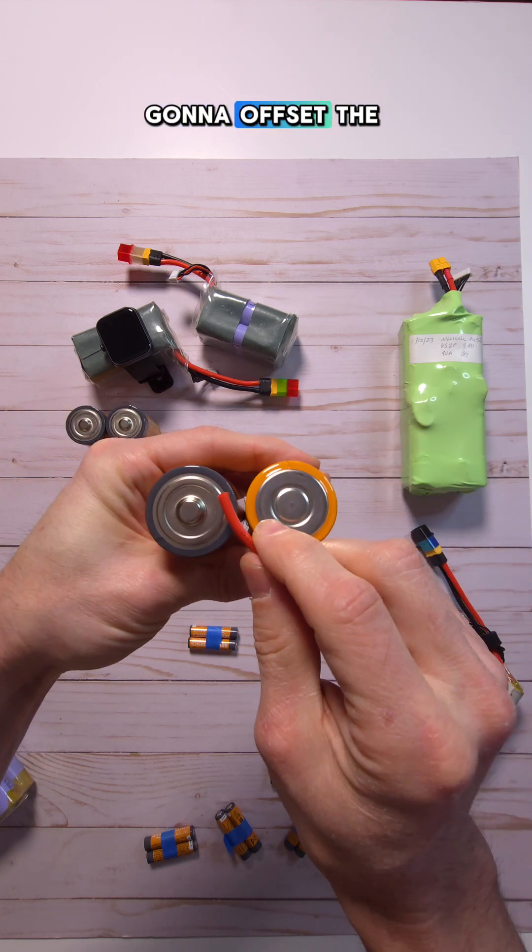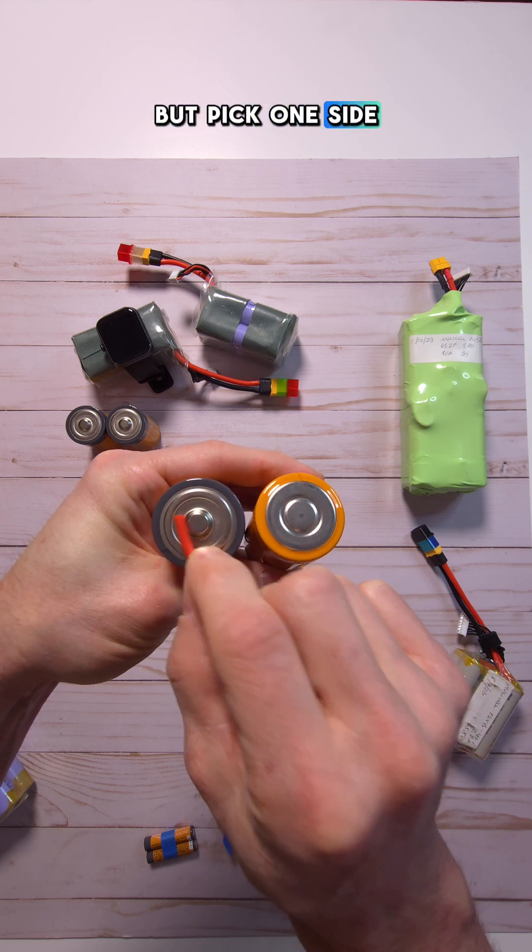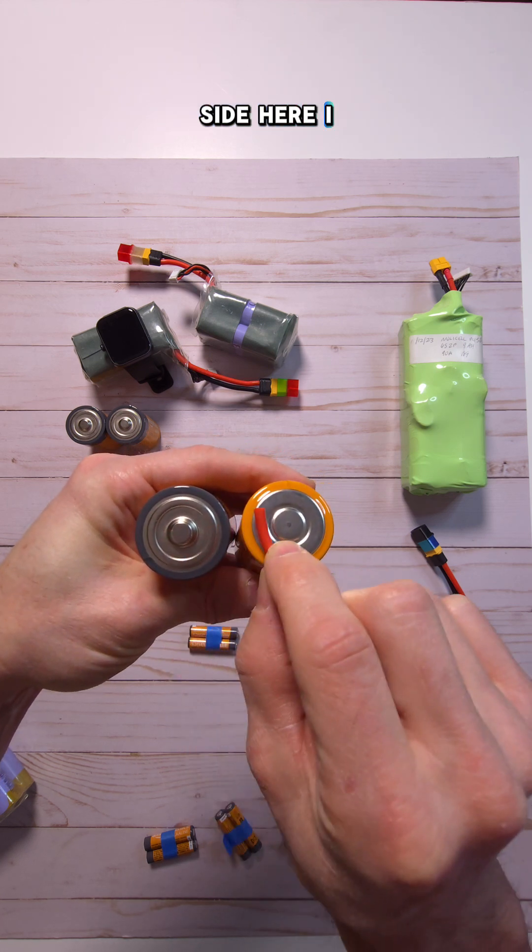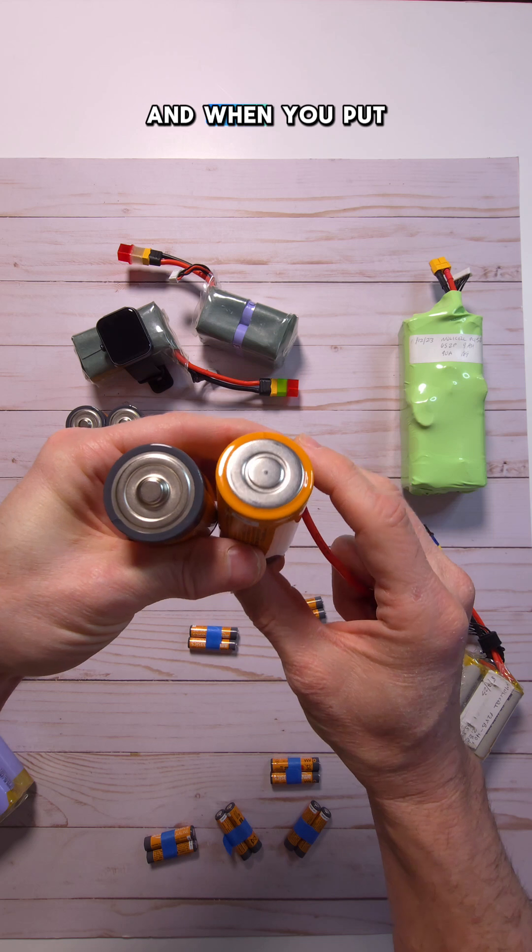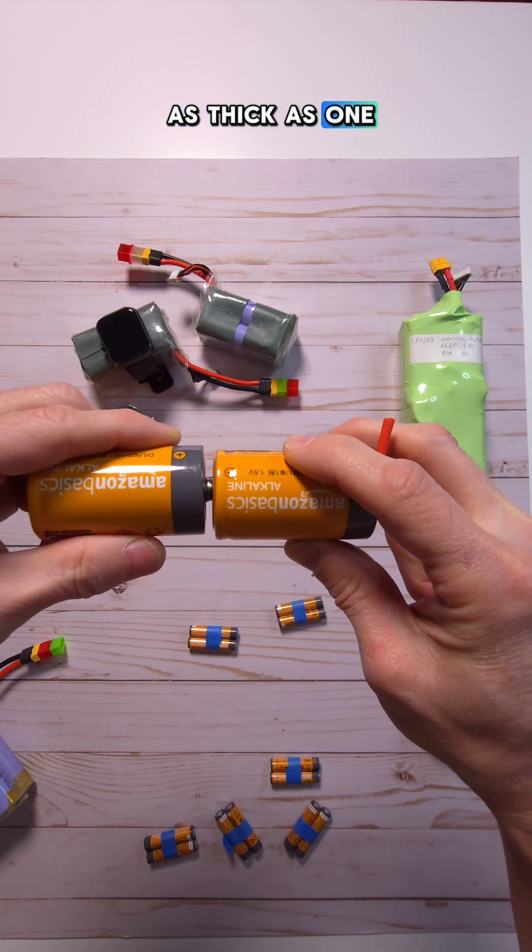So what you're going to do is you're actually going to offset the wire to the left side, or it could be to the right, but pick one side on each. So I solder one side here, I solder the other side here. And when you put the two pieces together, it's only going to be as thick as one piece of wire.